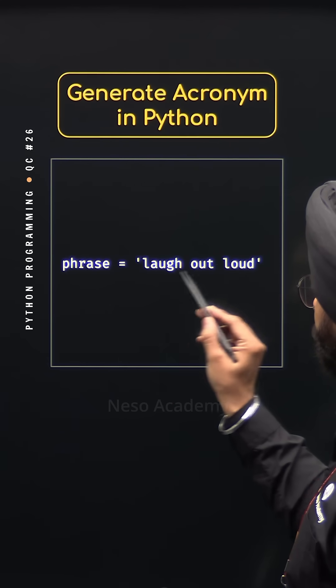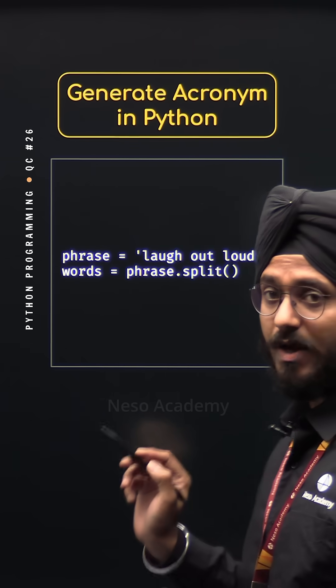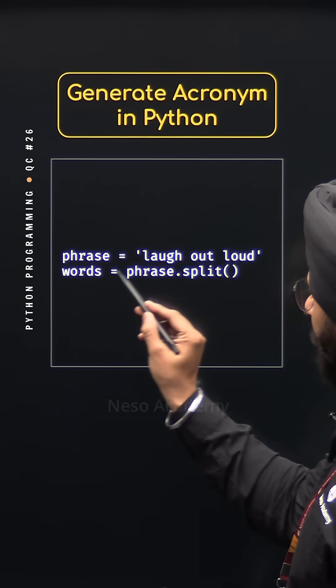For this, first we need to split this string into substrings with the help of the split method. Split method will return us the list of three items, laugh out and loud, in the variable words.